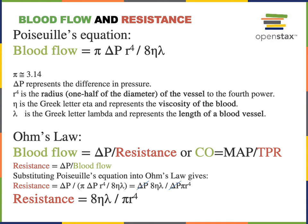R stands for the radius, which is one half of the diameter of the vessel. Notice that in this equation, radius is raised to the fourth power, so a small increase in the radius of a blood vessel can create a large increase in the rate of blood flow.